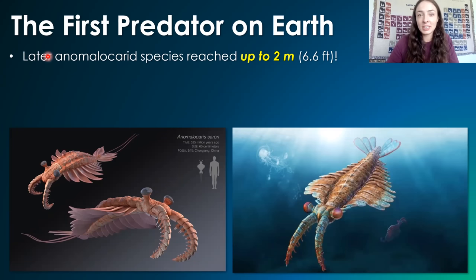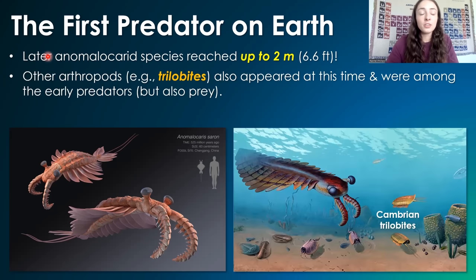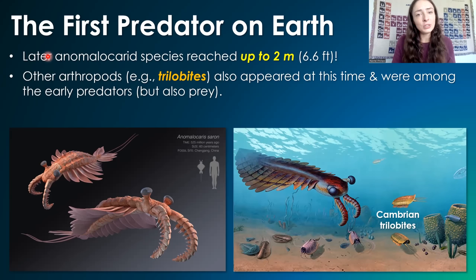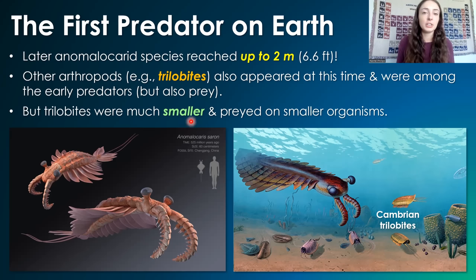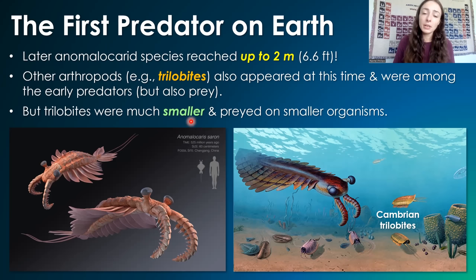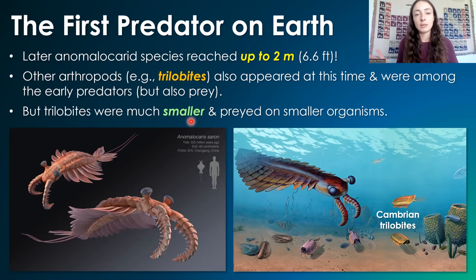Organisms at the time were very primitive and not that big yet, so this just made anomalocaridids more and more successful. Other arthropods like trilobites were also successful and acted not only as prey but also as predators themselves, though they were much smaller than anomalocaridids. But this 'much smaller' didn't last very long — trilobites got way bigger throughout the Paleozoic, completely diversifying into all these different types of forms.